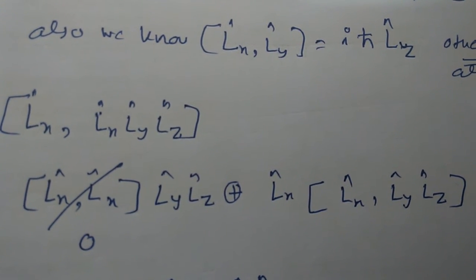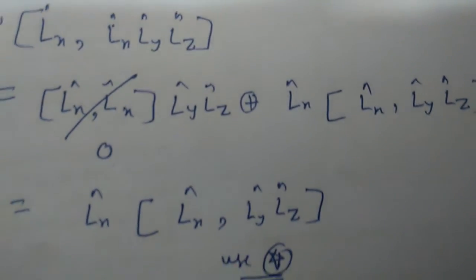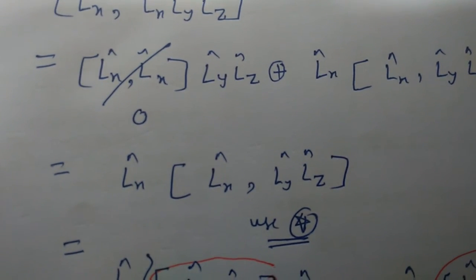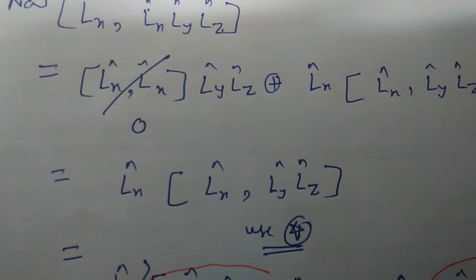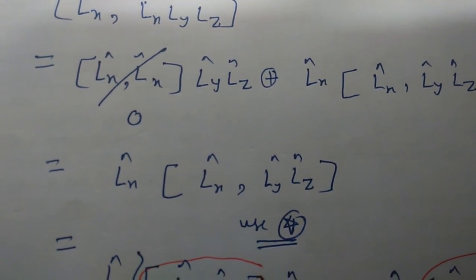The commutator [Lx, Lx] will be 0, so we have Lx times [Lx, Ly] times Lz. Now using again the star equation we have...